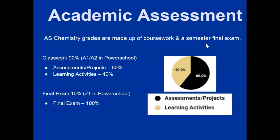Academic assessment: your AS Chemistry grade is made up of coursework and semester work. Your coursework is 90% and your semester final is 10%. Of that 90% coursework, 60% is assessments and projects and 40% is learning activities. Your final will be at the end of the semester and is worth 10% of your overall grade.